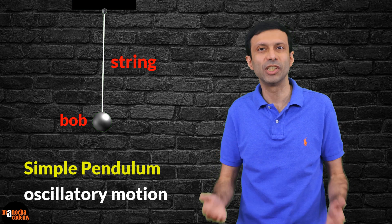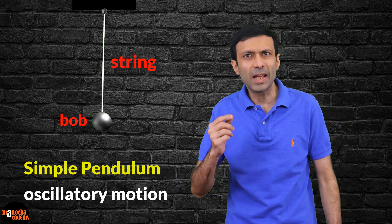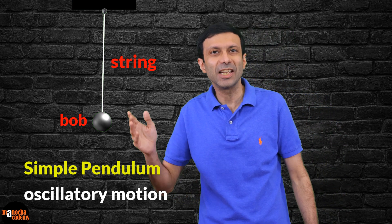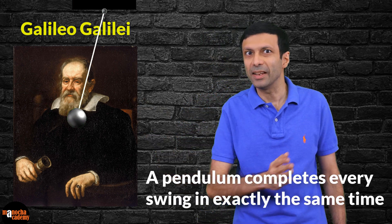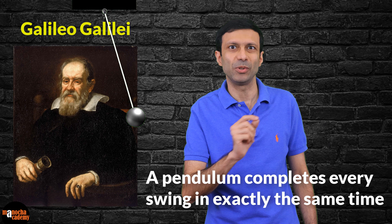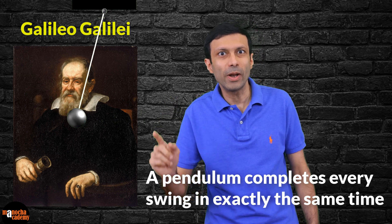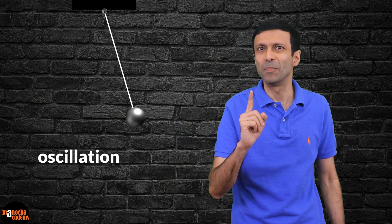We can pull the bob and make it swing to and fro like this. The famous scientist Galileo discovered an important principle of the pendulum. He discovered that a pendulum completes every swing in exactly the same time. A to-and-fro swing of the pendulum is called an oscillation.